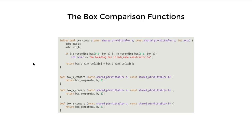This is the comparison function used as a helper in the previous function. Here we just check the minimum points on the chosen axis - specifically the minimum point on that axis of the bounding box of each object. We use this as a rough way to sort the objects.